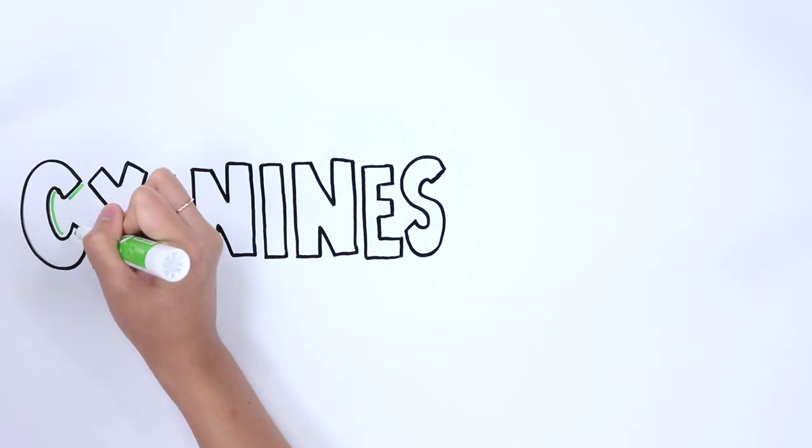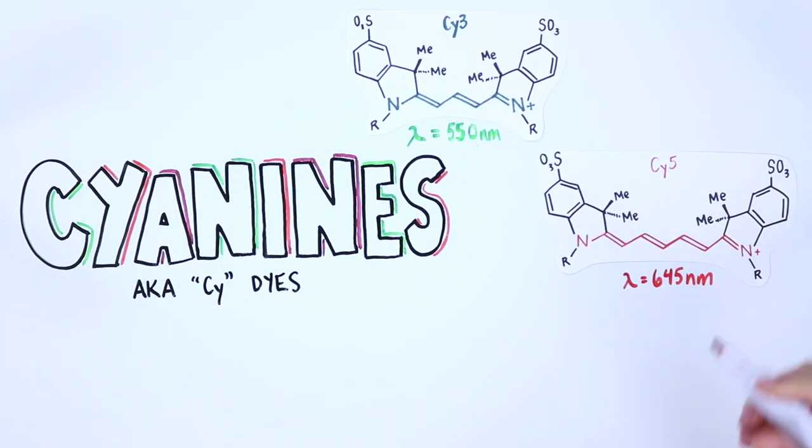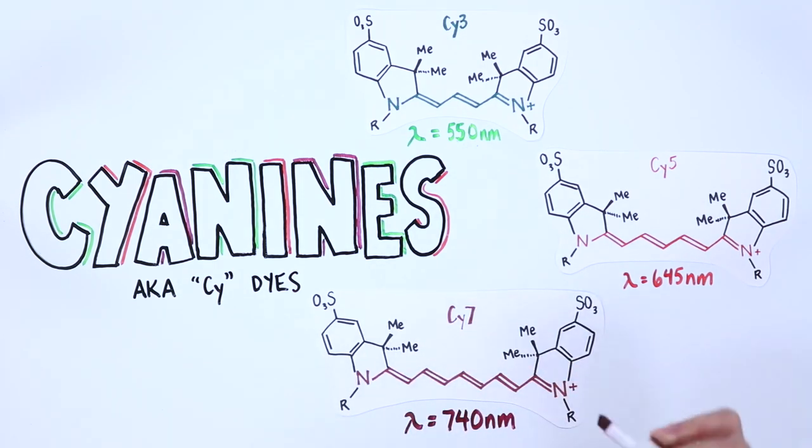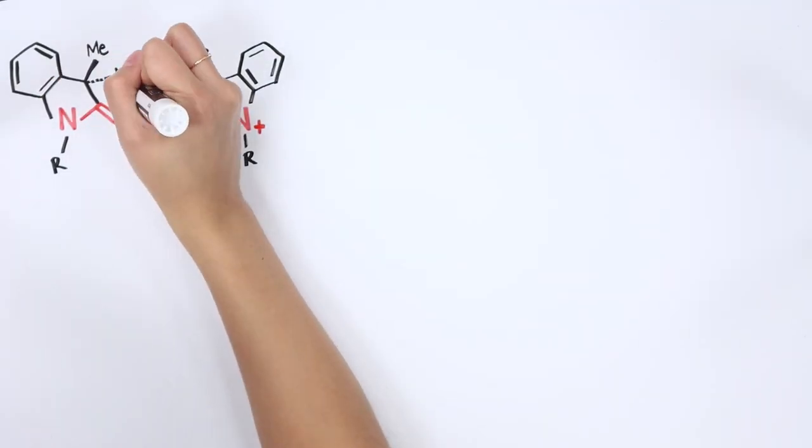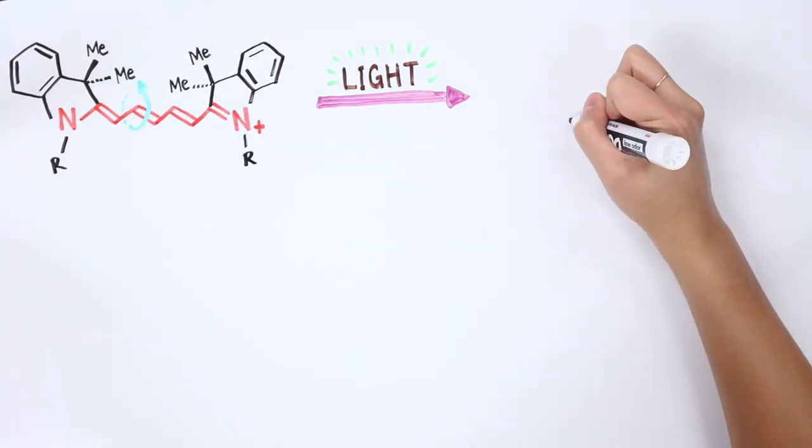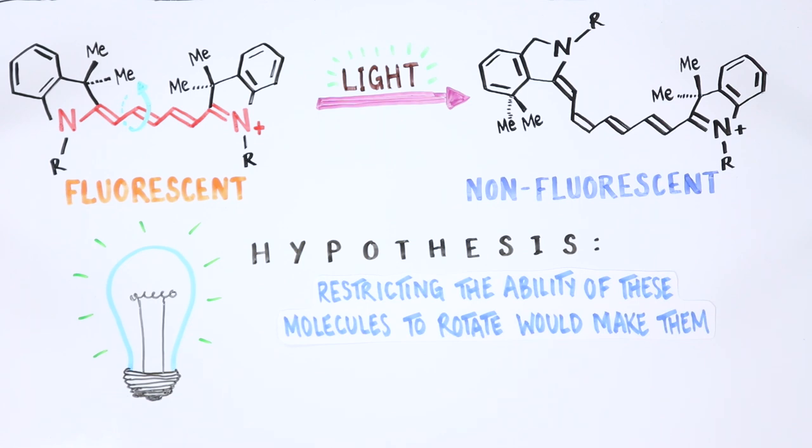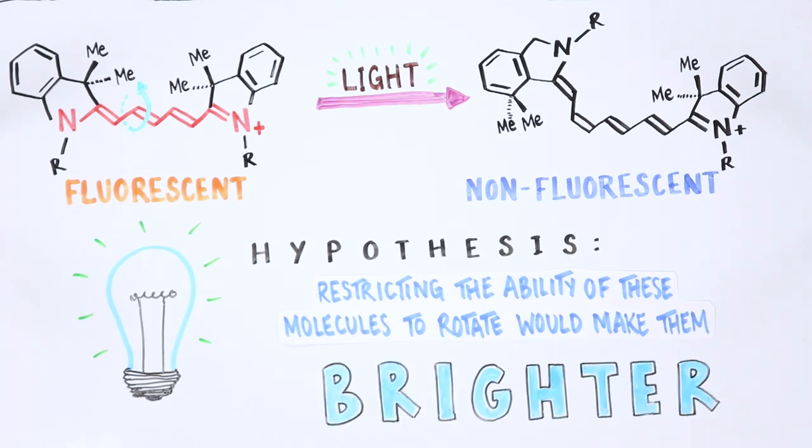Most of our work has been on a class of fluorescent probes called the cyanines, sometimes called the psi dyes, which have strong light-absorbing properties. However, as fluorophores they are not very bright, which limits their use for addressing many important problems. Our lab speculated that the reason cyanines are not very bright is because these molecules rotate after they absorb light. We made the hypothesis that restricting their ability to rotate by attaching a rigid structure would make them brighter.